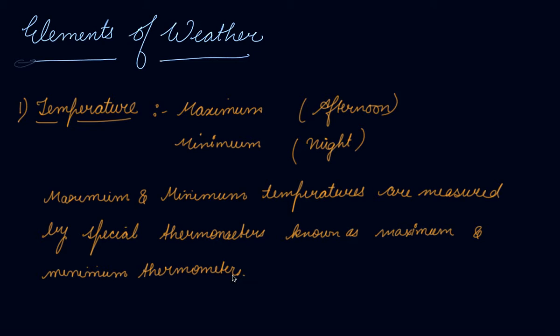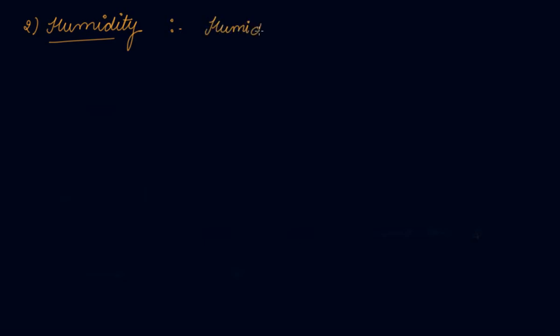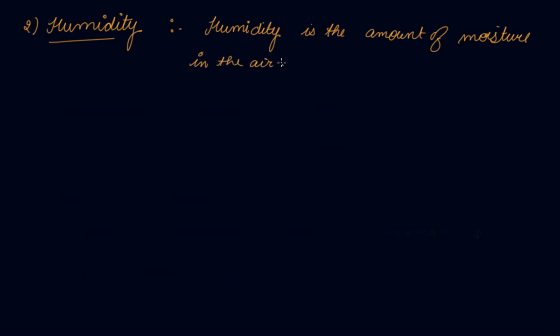That was the first element of weather — temperature. Now the second element is humidity. Humidity is the amount of moisture in the air — how much water is present in the air, how moist the air is.